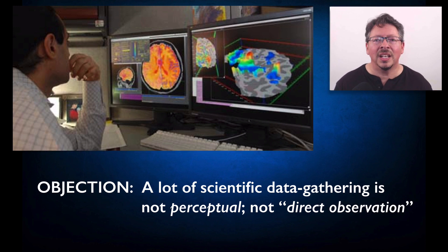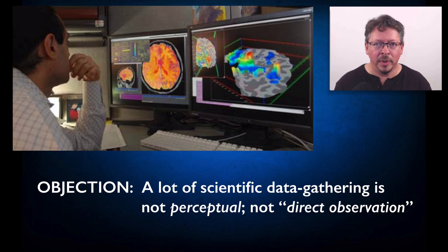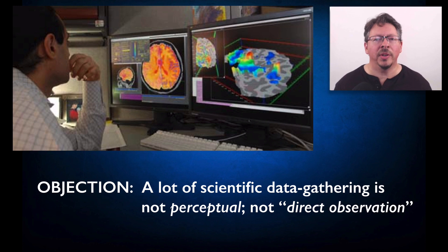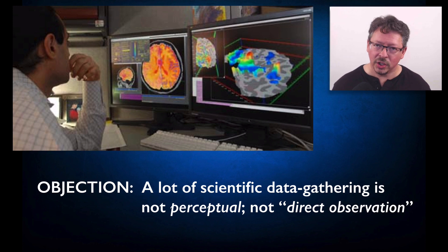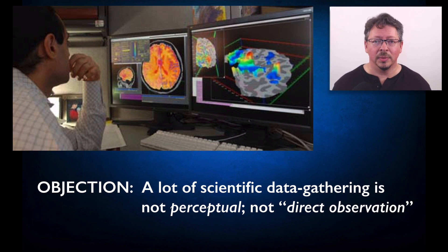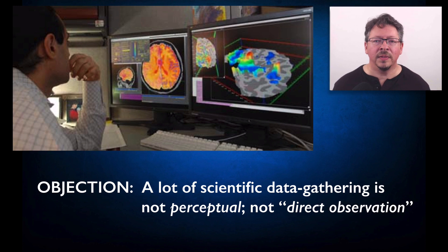So in this process, the sensory experience of the scientist is limited to monitoring the equipment, keeping an eye on the patient, and discriminating the colors in an image. So if we want to say that fMRI images record observations, it's very hard to say what exactly was observed. This is very far from our paradigm examples of direct observation. But we use this kind of data all the time in science to test theories.